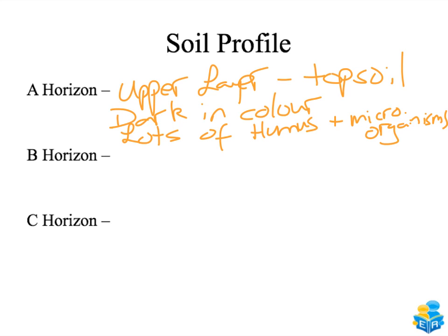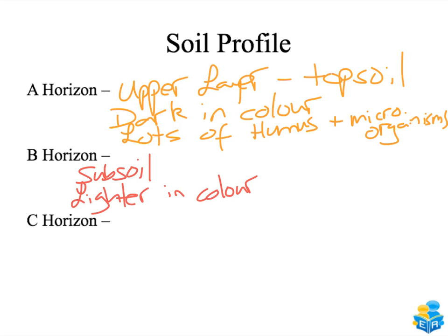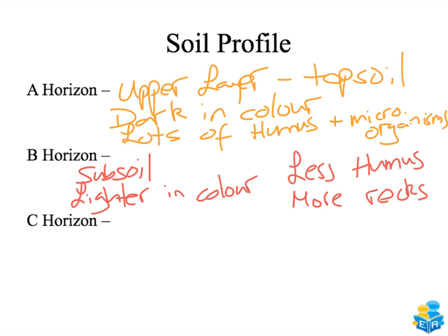The B horizon is beneath the topsoil — it's known as the subsoil layer. It's lighter in colour, has less humus than the A horizon, and has more rocks than the A horizon.